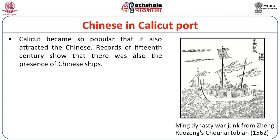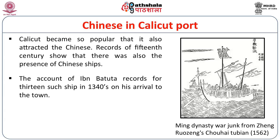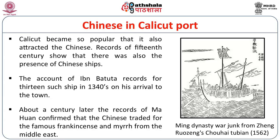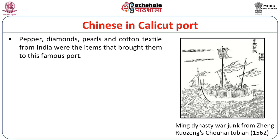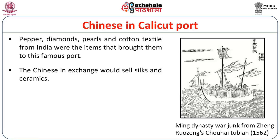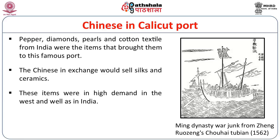The Chinese had a very important role to play in the Calicut port. Records of the 15th century show that there were Chinese ships operating in this area in large numbers. The account of Ibn Battuta records 13 such ships in the 1340s on his arrival to the town. About a century later, Mahuan confirmed that the Chinese traded for the famous frankincense and myrrh from the Middle East. Pepper, diamonds, pearls and cotton textiles from India were also brought to this famous port. The Chinese in exchange would sell silks and ceramics, which were in high demand in the West and among elites in India.